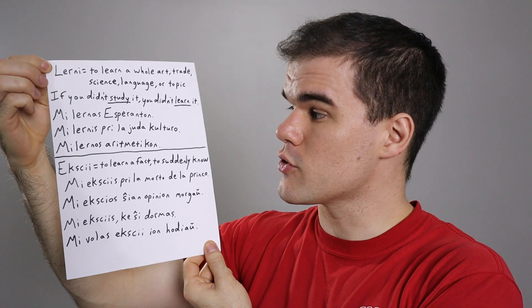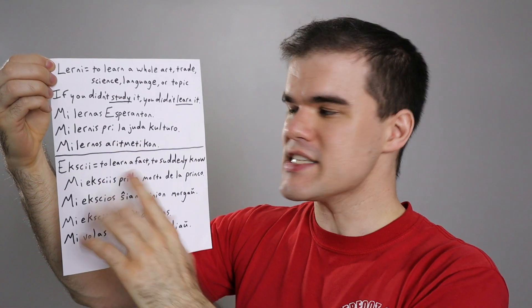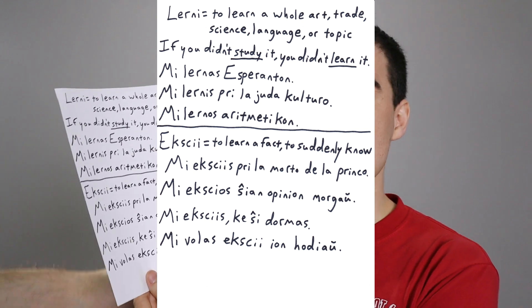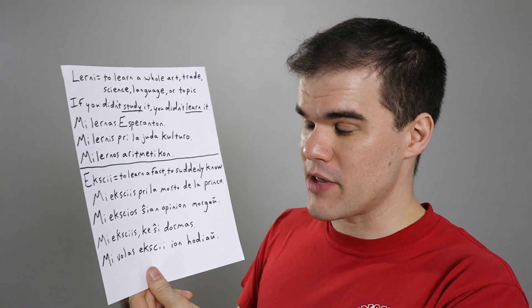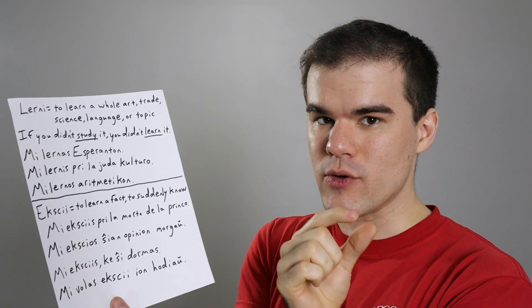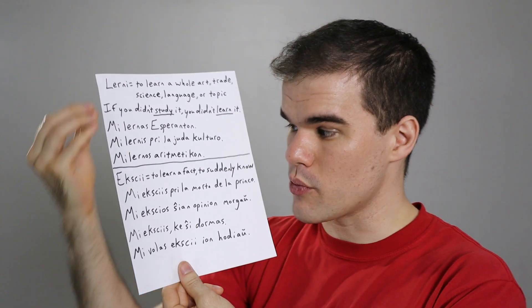So I'd say 'mi lernas Esperanton' — absolutely correct. 'Mi lernis pri la juda kulturo' — I learned about Jewish culture, a very wide topic. But if I say 'I learned about a jingle competition happening for musicians,' you wouldn't say lerni, because you didn't delve into that. There's not much to that fact — a competition is happening. I didn't lerni that; I ekscii-is that. You could say 'mi lernos aritmetikon' — I will learn arithmetic in la lernejo, the school. But you don't lerni that two plus two is four.